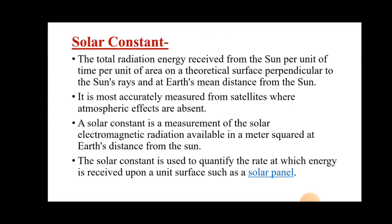First, let us understand what the solar constant is, then we will move into the details. The solar constant is nothing but the total radiation energy received from the sun per unit of time, per unit of area, on a theoretical surface perpendicular to the sun's rays, at the earth's mean distance from the sun.